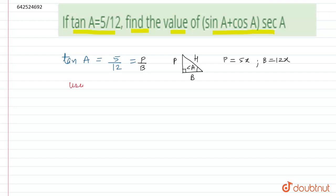So first of all, we need to find the hypotenuse. For finding the hypotenuse, we can easily use Pythagoras theorem. So what is Pythagoras theorem? Pythagoras theorem says that perpendicular square plus base square equals to hypotenuse square.